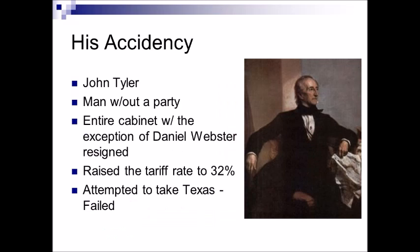That raises John Tyler to the office of president. John Tyler was a terrible choice — a man without a party. The Democrats don't like him because he left their party to become a Whig, but the Whigs don't like him because he used to be a Democrat. He literally has no party. He comes into power as the first vice president to be raised to the office of the president because of death.